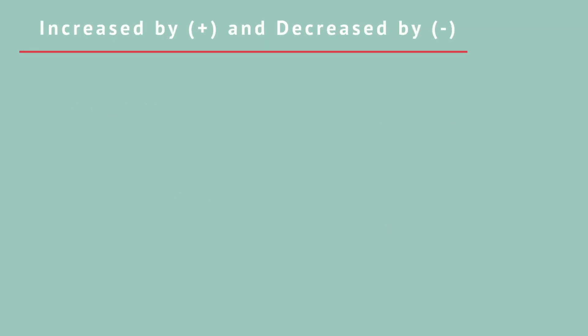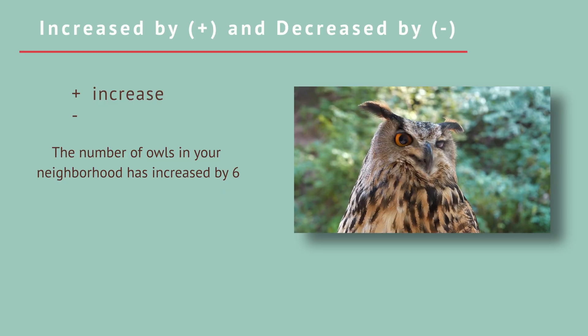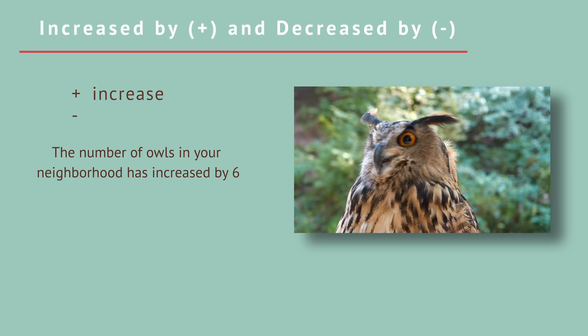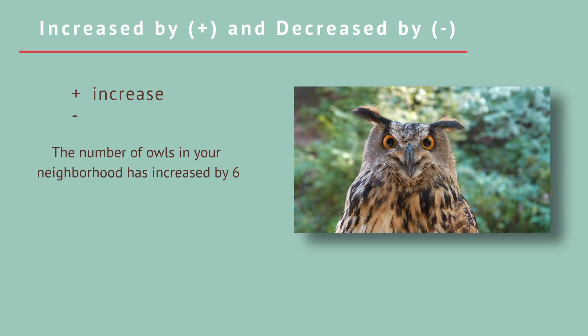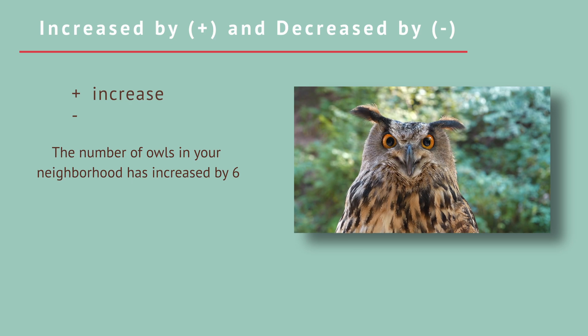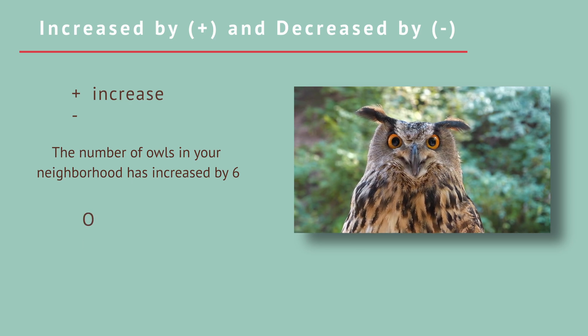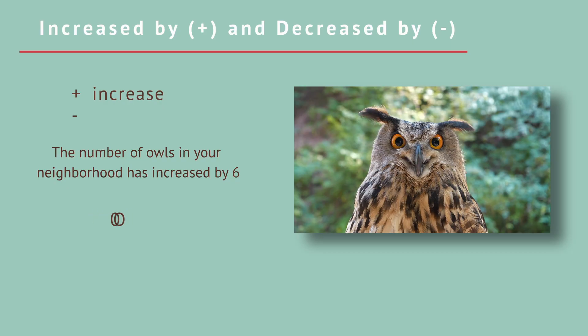Increased by and decreased by. The plus sign and minus signs are used a lot in math language. Here are two situations where you will use these math symbols. If you say something increases by a certain amount, you use addition, or the plus symbol. For example, we can say that the number of owls in your neighborhood has increased by 6. Let's pick a variable name for the number of owls. Can you see why we probably shouldn't use the letter O? O looks a lot like the number zero, so to avoid confusion, let's use the letter W.